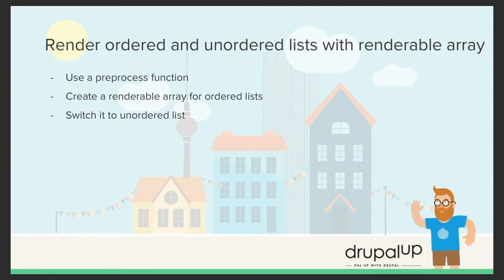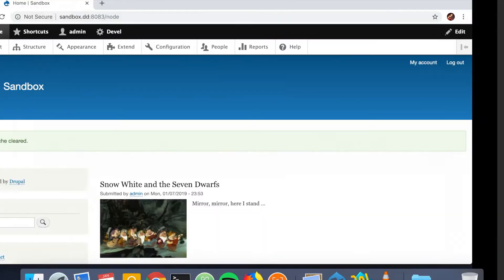In this video we're going to be taking a look at rendering ordered and unordered lists with renderable arrays. We're going to use a preprocess function and create a renderable array for ordered and unordered lists.